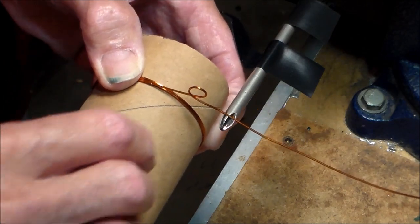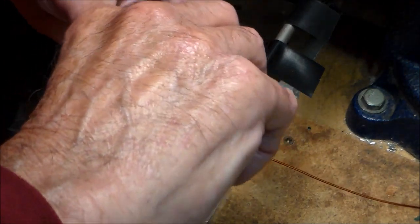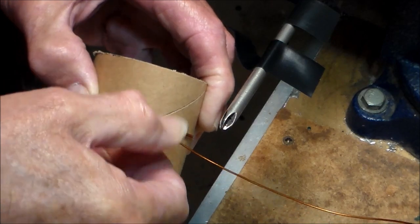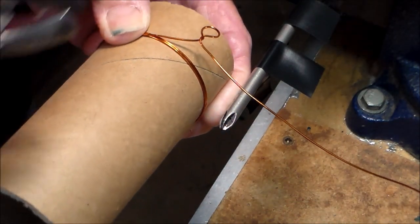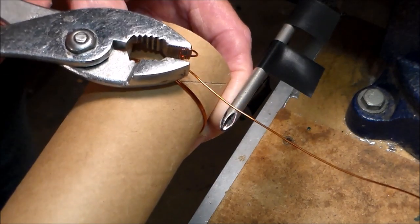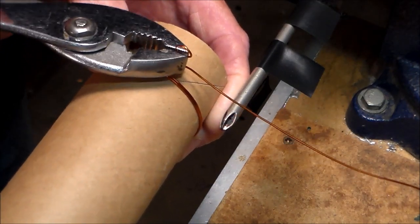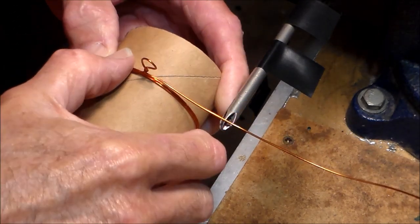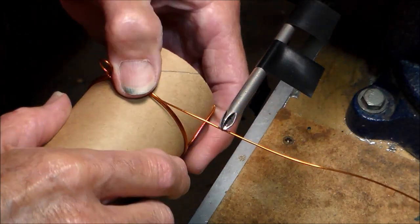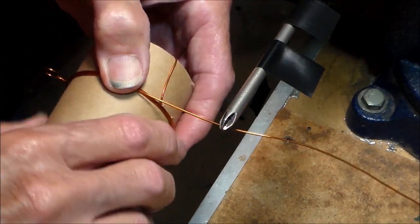The next step is to grab the loop firmly between thumb and forefinger. Give it one half turn clockwise. One half turn is all you need. Then take your regular slip joint pliers and squeeze the twist as tightly as possible to make it flat. Then you simply continue winding and counting your turns.